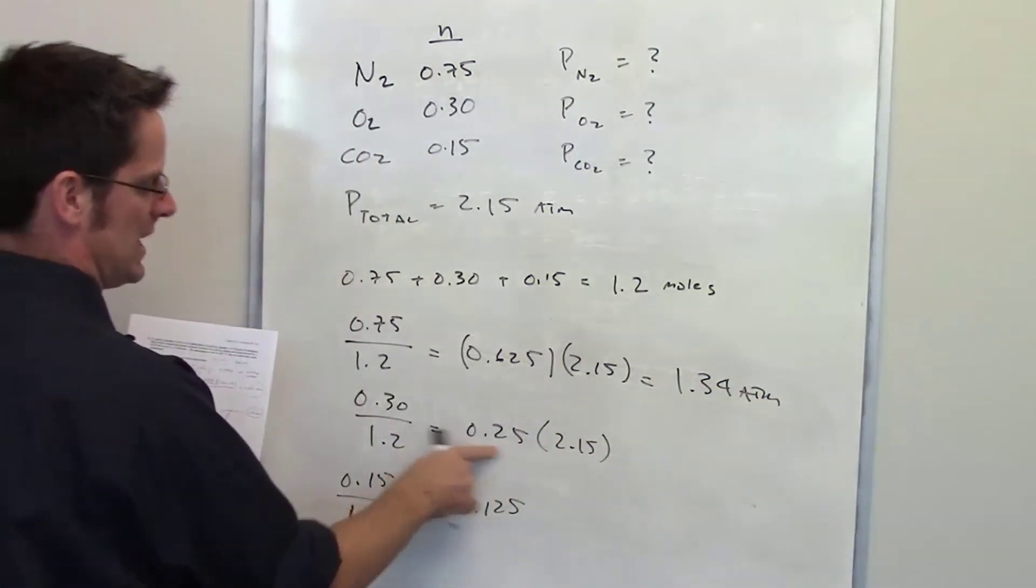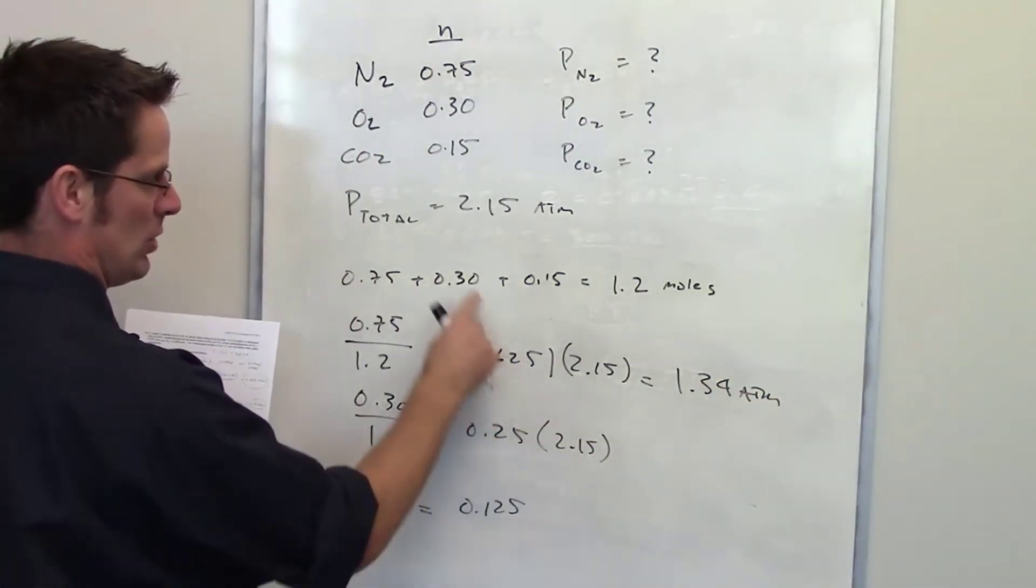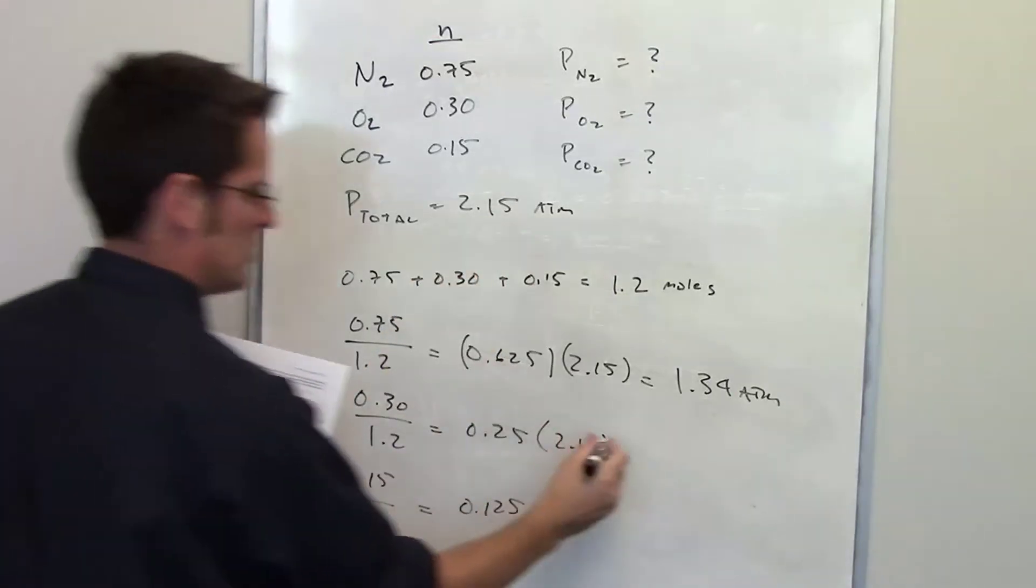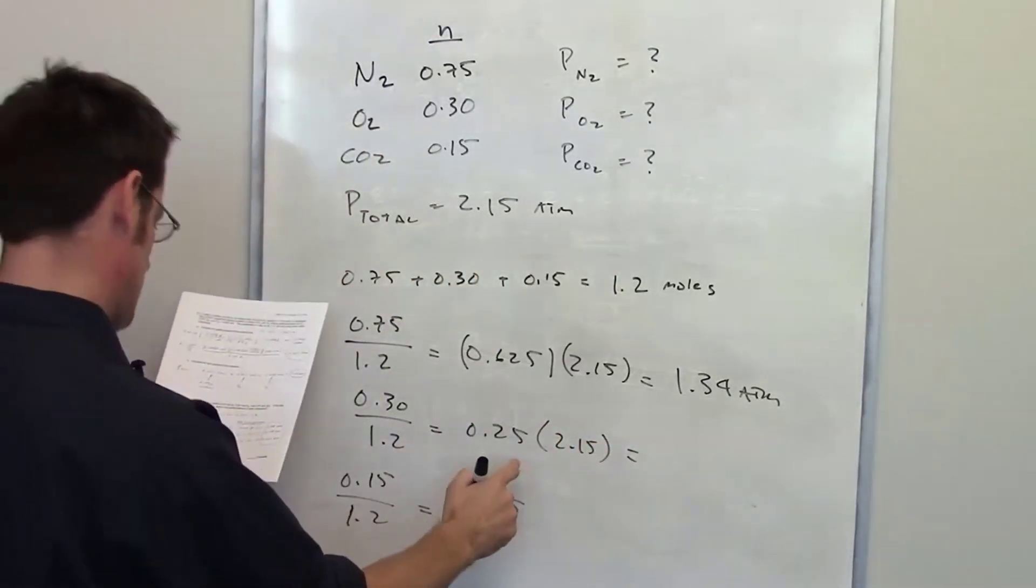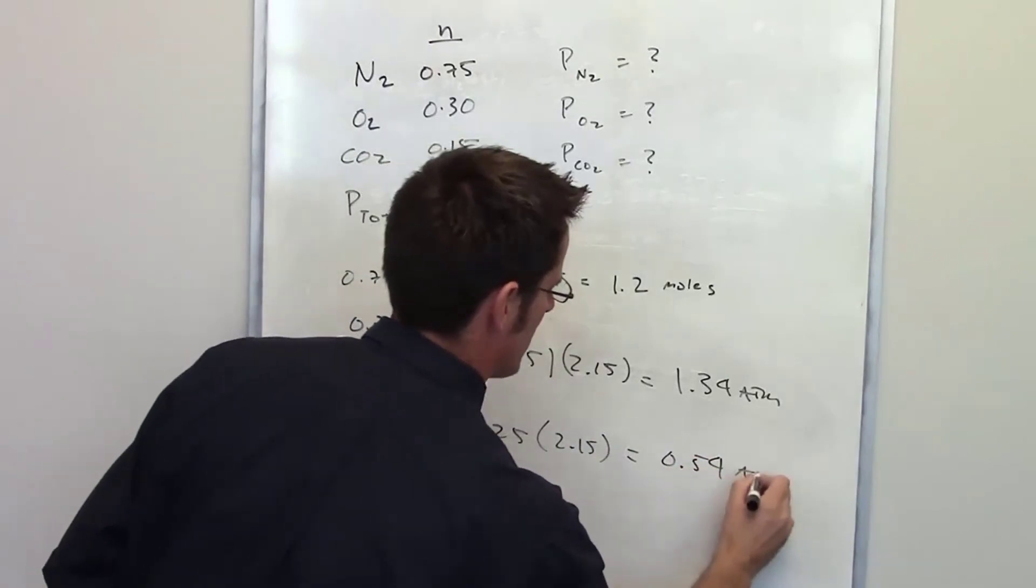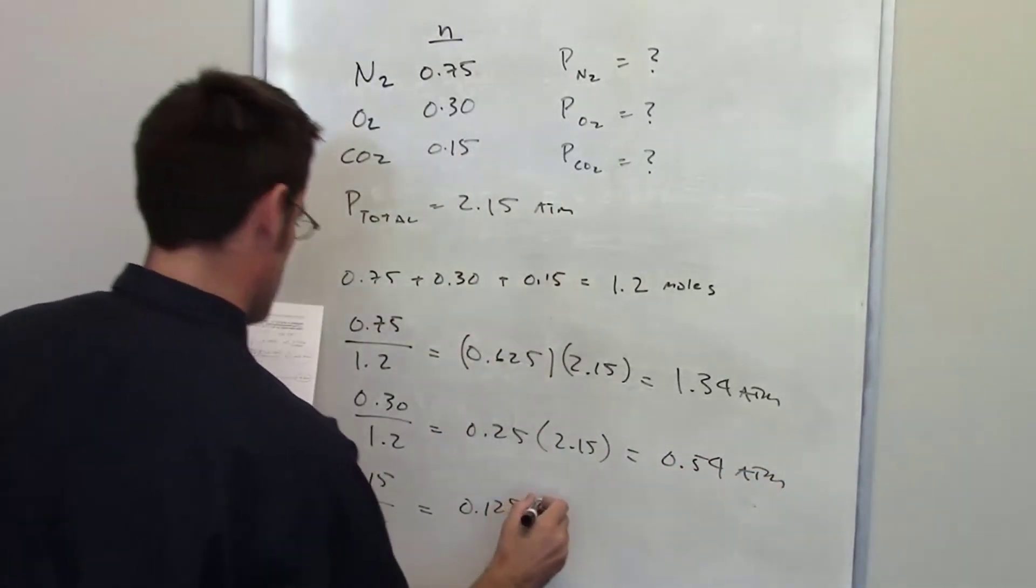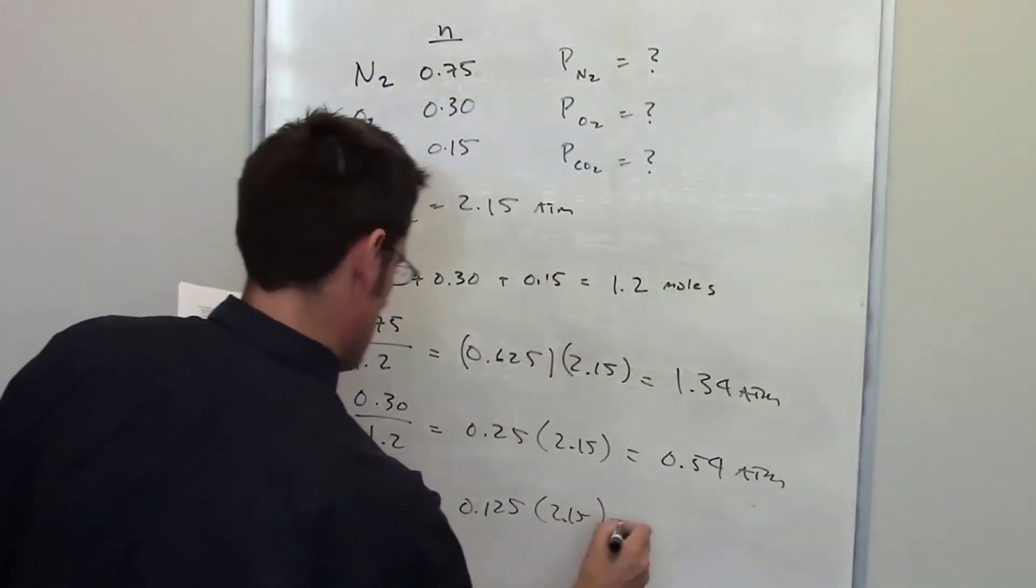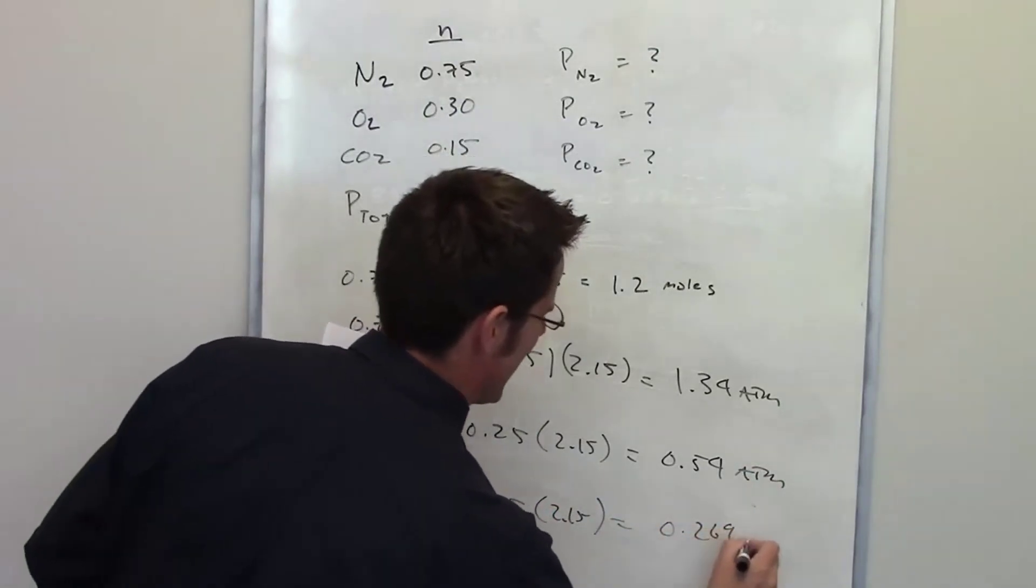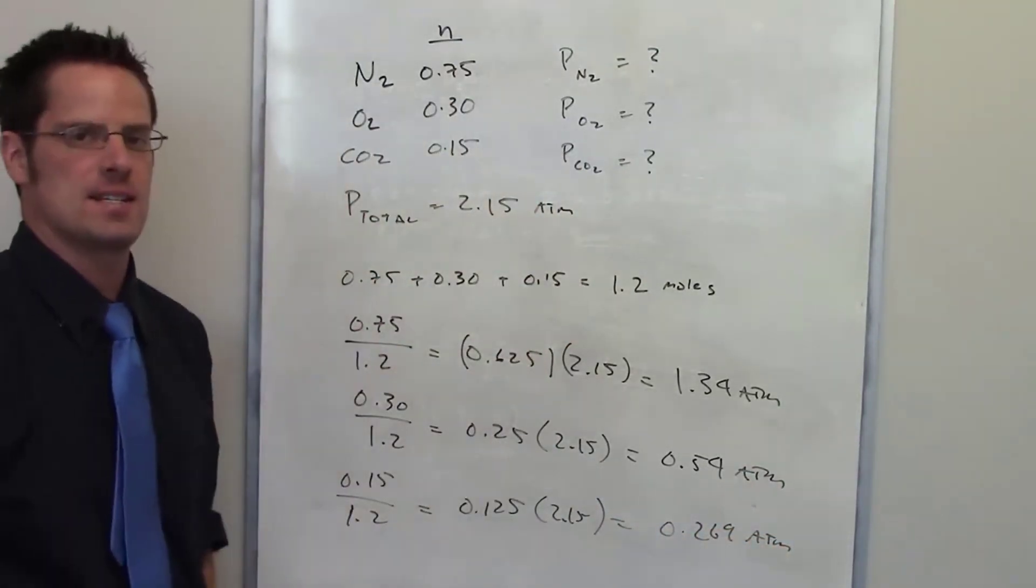You can hopefully see what I'm doing - I'm taking the mole fraction multiplying it by the original total pressure, which is 2.15 atmospheres. Oxygen is exerting 0.54 atmospheres of total pressure, and carbon dioxide is exerting 0.269 atmospheres of total pressure on this system.